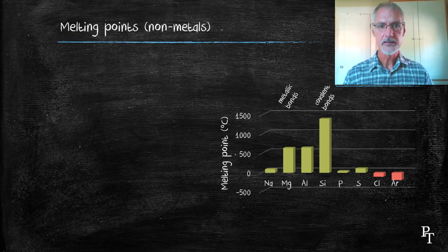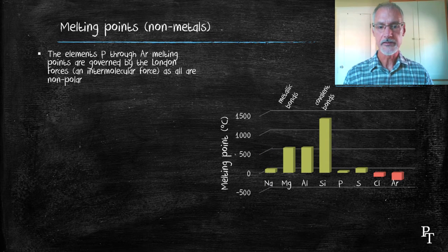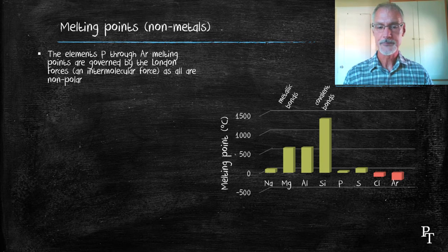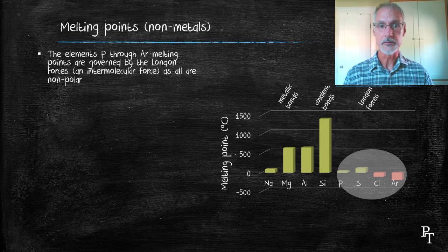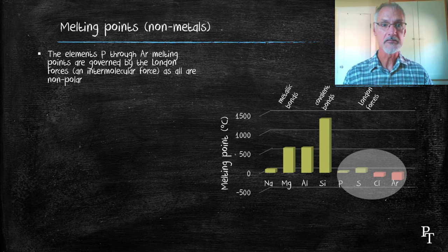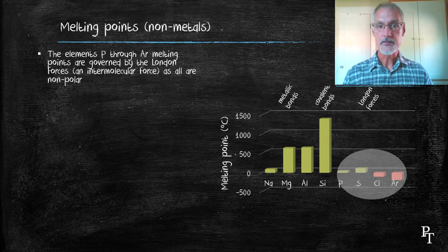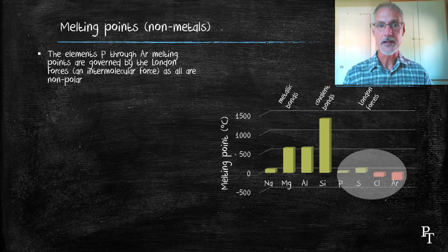Now, as we move beyond, we move into the nonmetals. And the first thing we notice here is that these tend to be much lower. The reason why is they're all governed by the London force, and you might recall that London force is one of our weak intermolecular forces. The temperatures that are shown here in red indicate that they're actually negative.